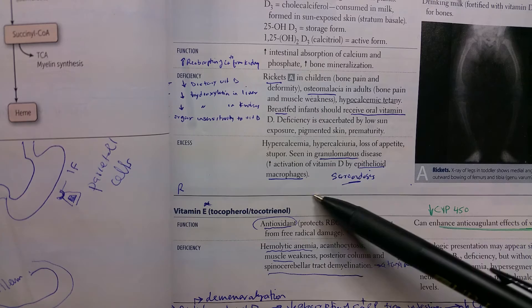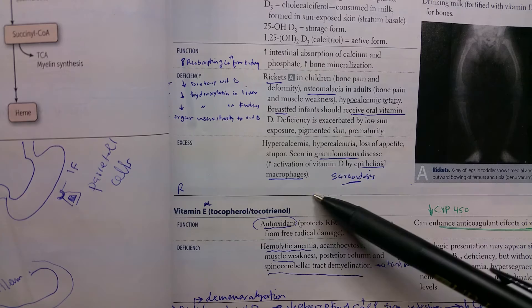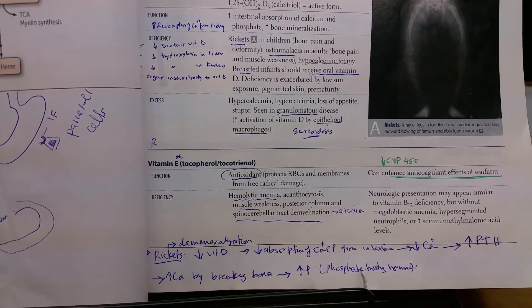The excess - the important thing to know is that in certain granulomatous diseases like sarcoidosis, the macrophage increases the activation of vitamin D, so it may cause excess.